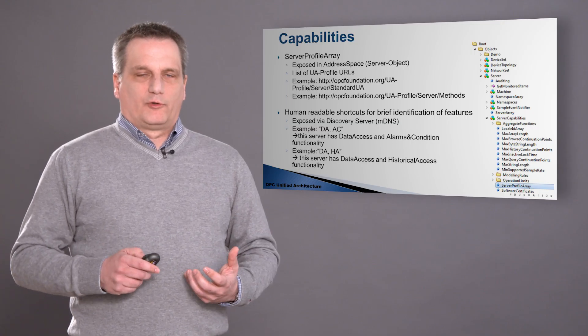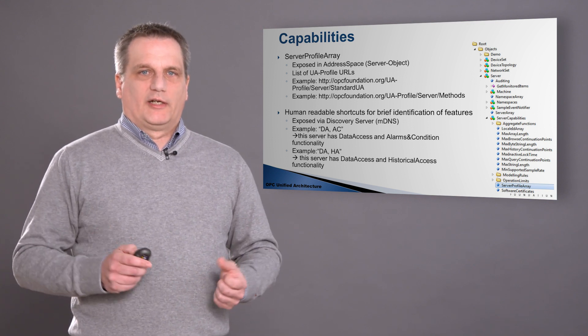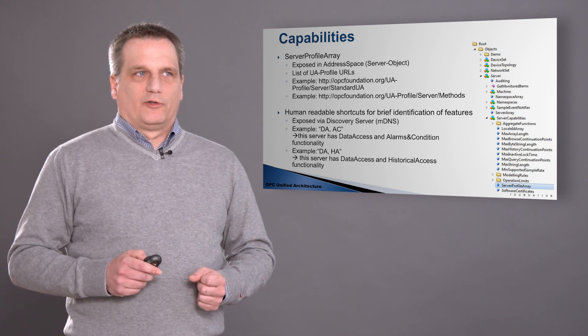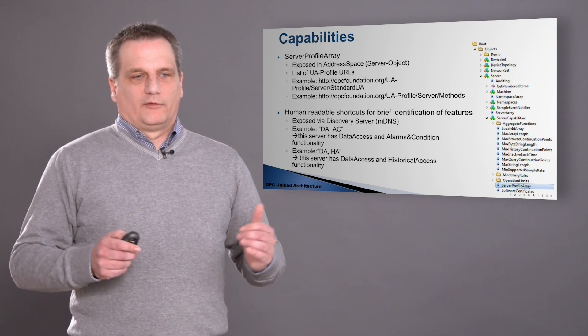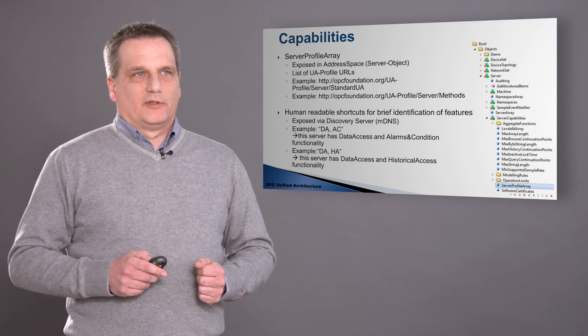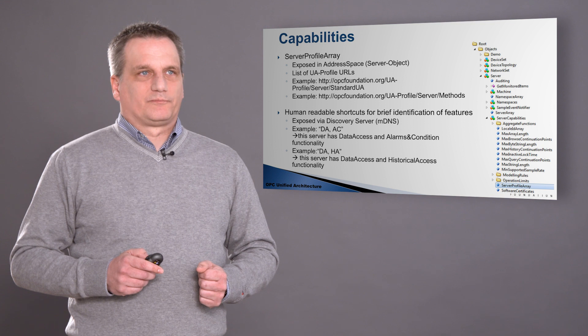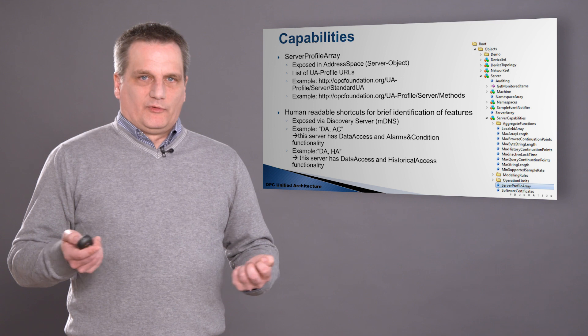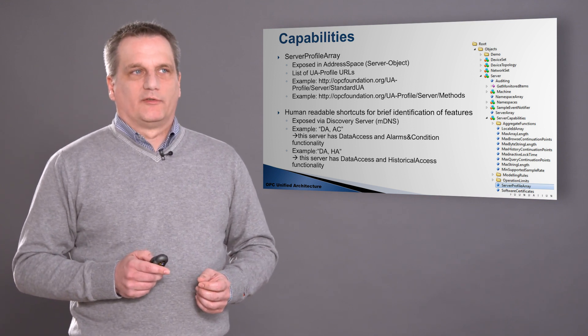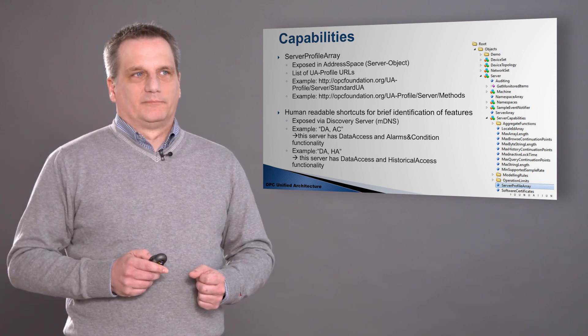Any OPC server should expose its capabilities so that the receiver can adapt to that. To do so, there is an object inside the server address space called the server profile array, and in this array you can find all the profiles that this server supports. You can see it here from the picture on the right side — the tree of the address space where you can find it. In addition to the profile URIs, we have human readable shortcuts which give you a very brief summary of capabilities, and these are also discoverable and exposed through the discovery service. For example, DA means data access, AC means alarms and conditions, and HA means access to historical information.